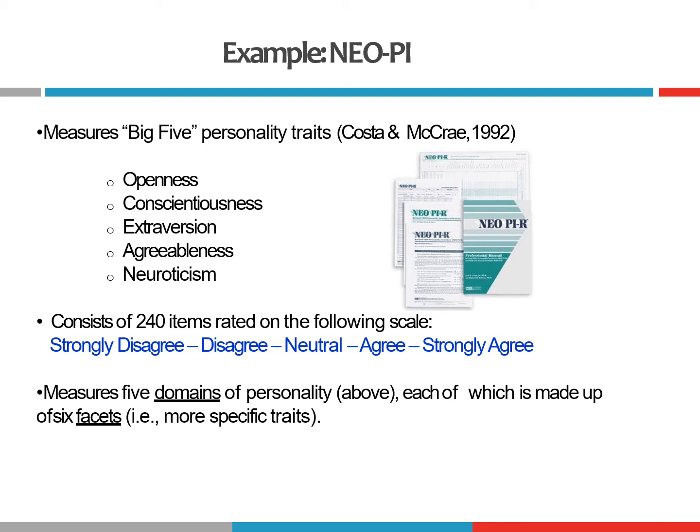So let's work through one more example. There is a very well-known psychological test that measures the five most critical personality traits. The Big Five consists of openness, conscientiousness, extroversion, agreeableness, and neuroticism. There are a total of 240 items rated on a Likert scale ranging from strongly disagree all the way to strongly agree.